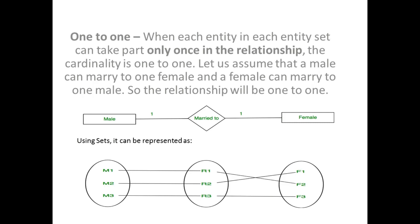Let us assume that a male can marry one female and a female can marry one male, so the relationship will be one-to-one. One entity is related to another entity — one-to-one means a male is married to one female. In the sets, you can see m1 is related to f2, m2 is related to f1, and m3 is related to f3. Since one male is related to one female, it is a one-to-one relationship.